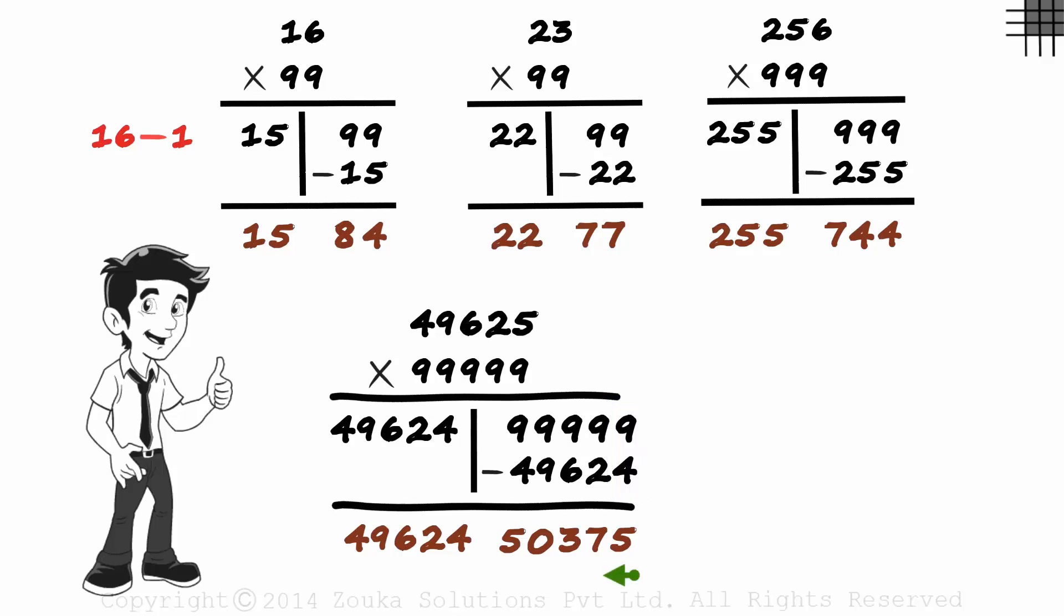I know we should ideally go from right to left while subtracting. But here all the digits on top are nine. They will definitely be larger than the digits of the number at the bottom, so we don't really need to worry about that. This is the product of these two numbers, and you may verify it using a calculator if you wish.